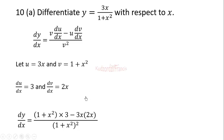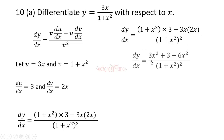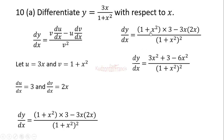We are done with the calculus; the rest is algebra. We multiply out: (1 plus x squared) times 3 gives 3 plus 3x squared, and 3x times 2x gives 6x squared, so the numerator becomes 3x squared plus 3 minus 6x squared, all over (1 plus x squared) squared.